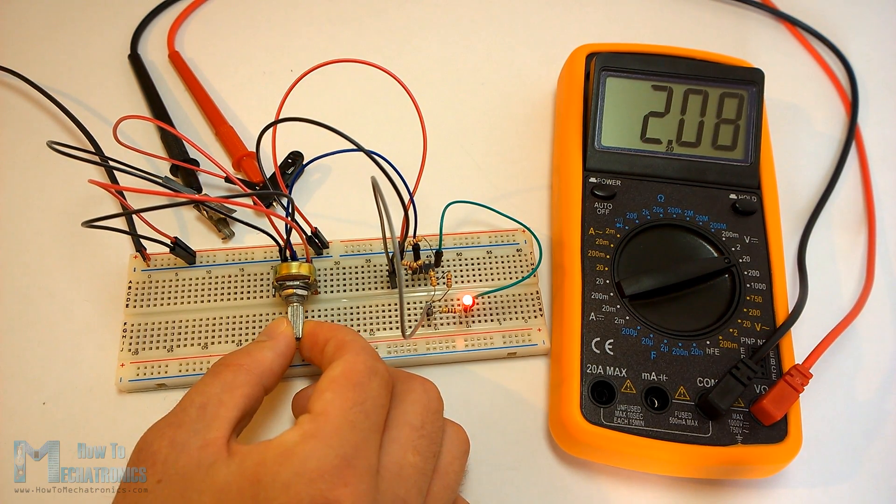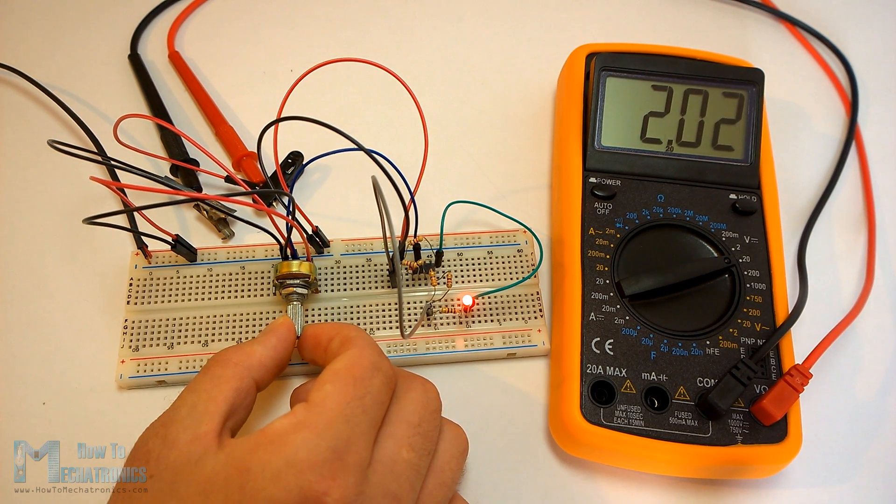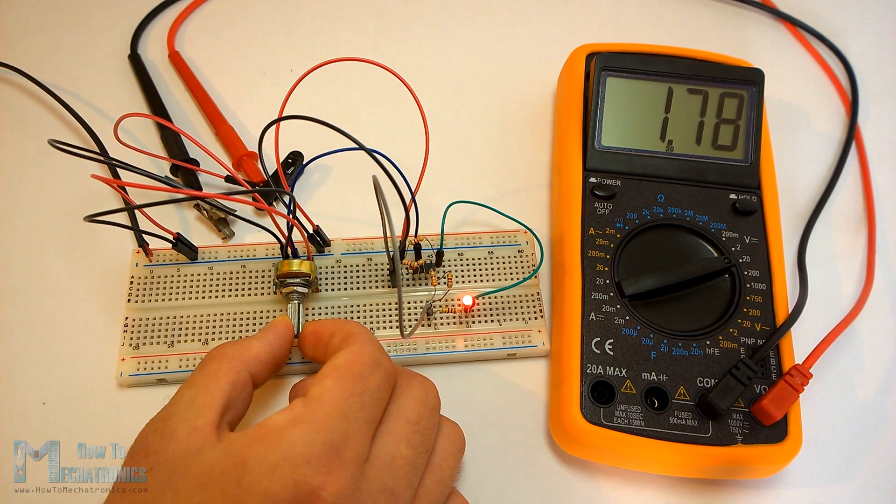Now for turning off the LED we have to decrease the input voltage to the lower threshold at about 1.3 volts.